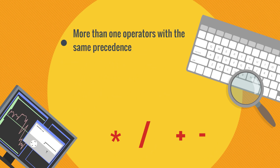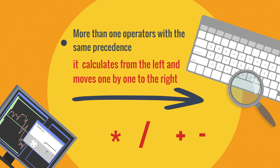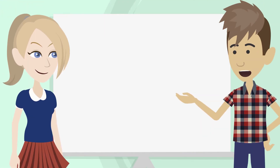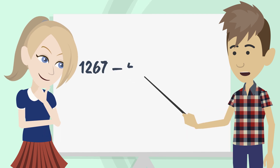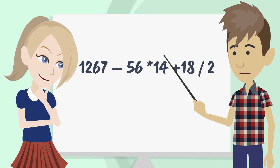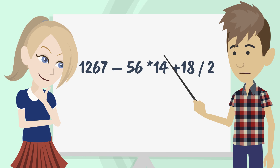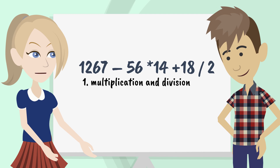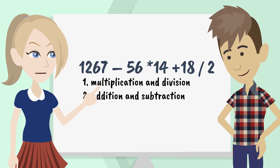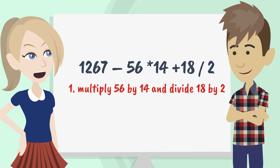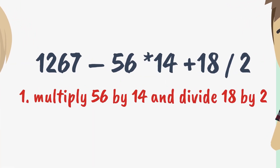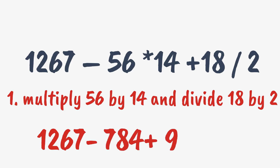In cases where Python sees more than one operator with the same precedence, it calculates from the left and moves one by one to the right. So tell me, Sophia, how will Python try to perform a calculation like this? The precedence of multiplication and division is before addition and subtraction, so it will multiply 56 by 14 and divide 18 by 2 first. It will solve it as: 1,267 minus 784 plus 9 equals 492.